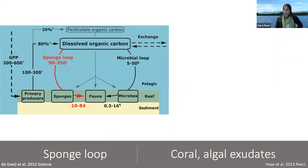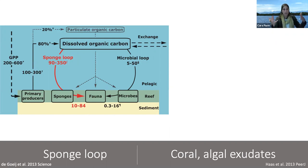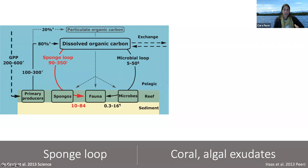Around the time I was starting my postdoc, a paper had come out on the sponge loop, published in Science. What they showed really nicely is that sponges can act as a conduit, moving dissolved organic nutrients from the water column into the benthic food web. Sponges take up these dissolved nutrients, turn them into biomass, and then shed cells in detritus that move into the benthic food web — demonstrated using stable isotope tracer experiments. I was also very curious to see if, in addition to this sponge loop, there would be another component — what the sponges might be releasing back into the water column as dissolved organic nutrients.